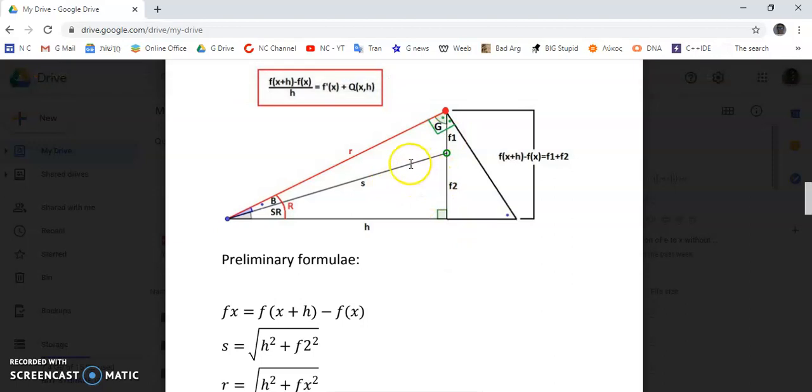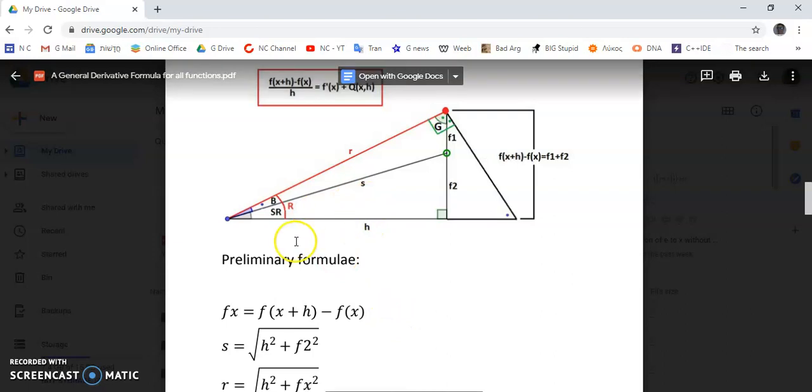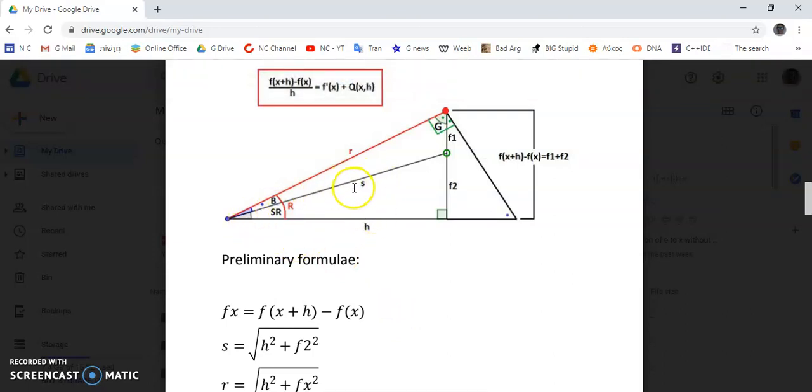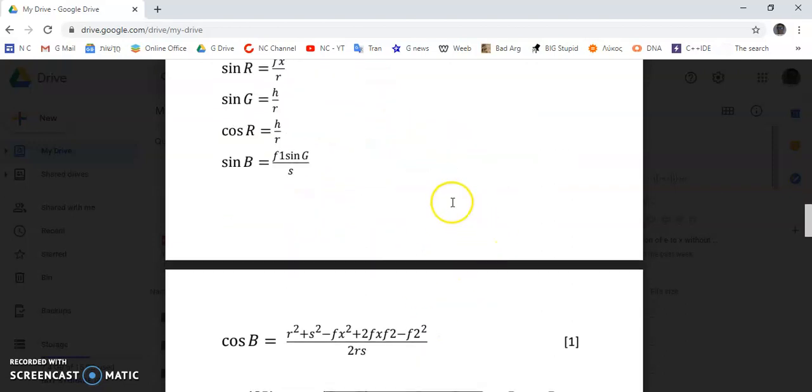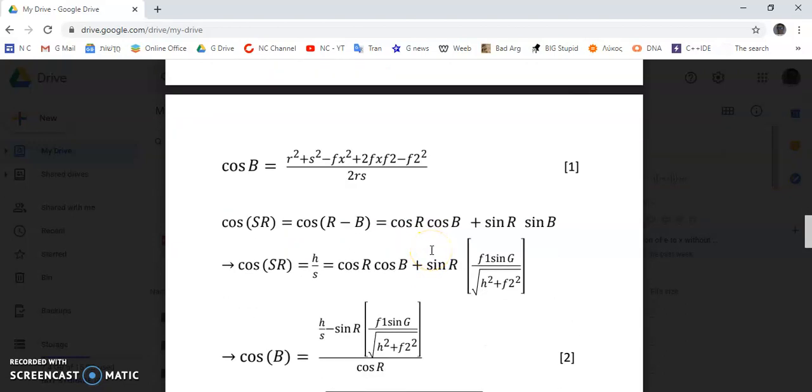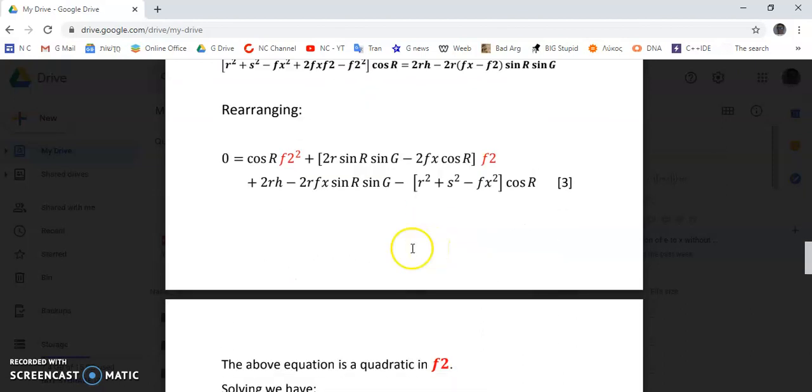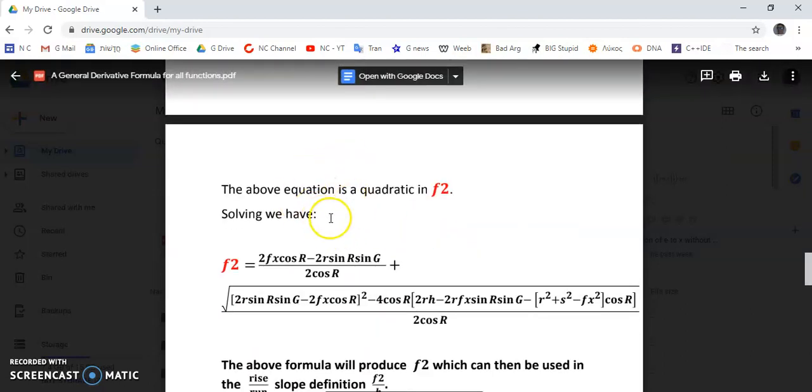Once you simply obtain this value f2, which happens to be the length of this line here - this is the tangent line and this is the secant line - then you're able to find the slope of the tangent line at a point, which is the derivative. I don't have the energy to go through all the details, but you can read this document to which I'll provide a link.